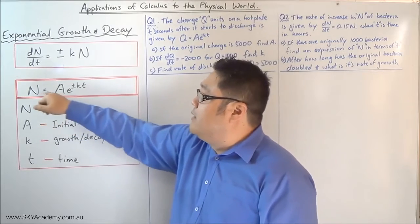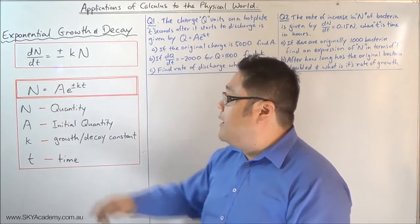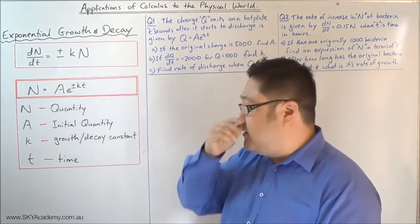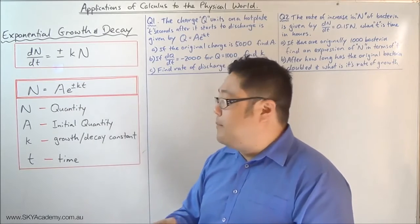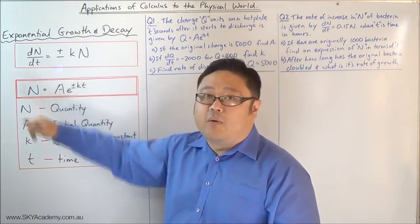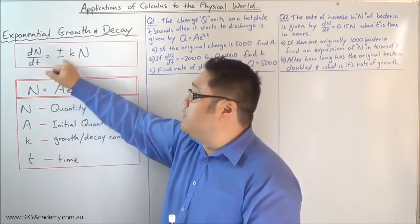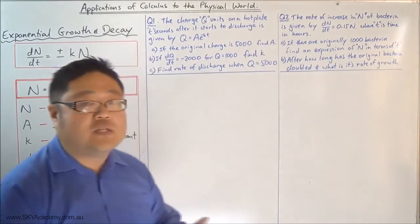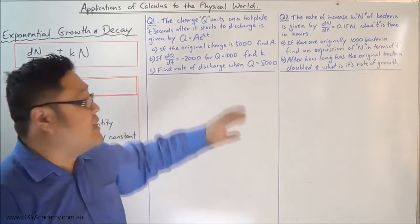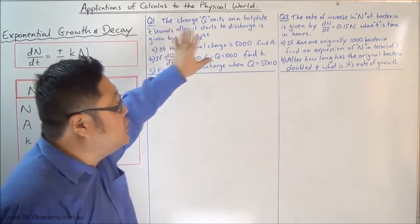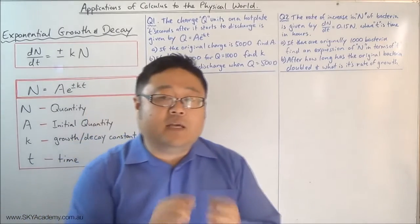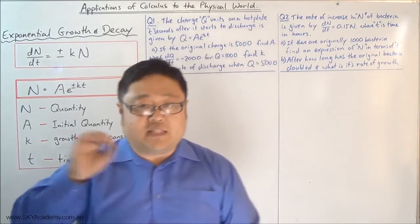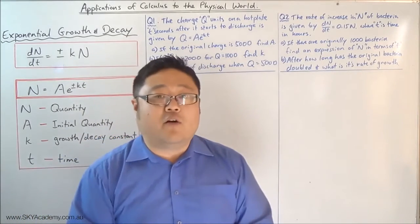In this formula, n is the quantity you have at any given moment in time, a is your initial quantity, and k is your growth and decay constant. That gives you, for any given time, the amount of quantity you have. Those are the two functions you need to remember, and we're going to apply them to two specific questions. If you can do these two examples, you're pretty much set for any growth and decay questions within the two-unit course.